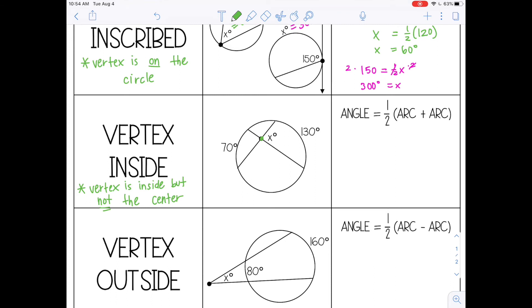The formula for this one, the angle equals half the arc plus the arc, or the arc plus the arc divided by 2. Same thing.